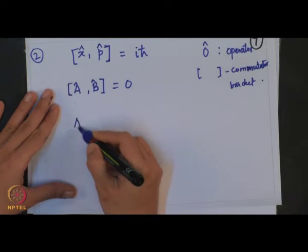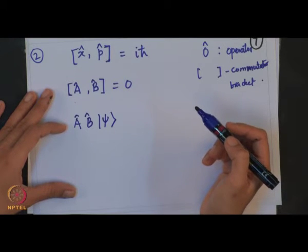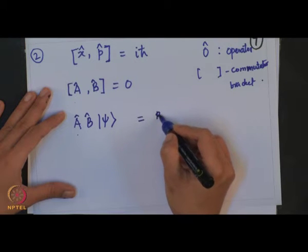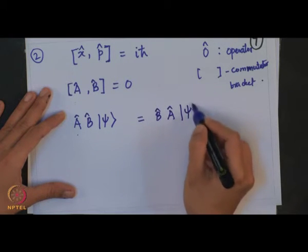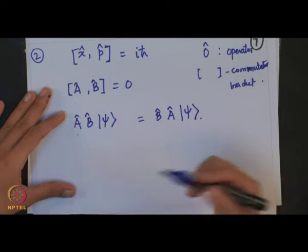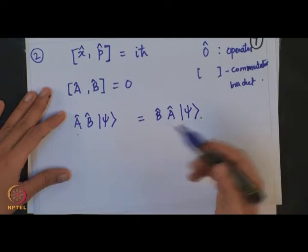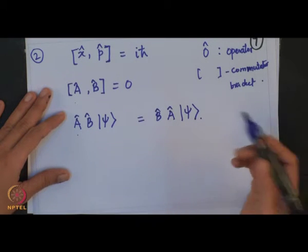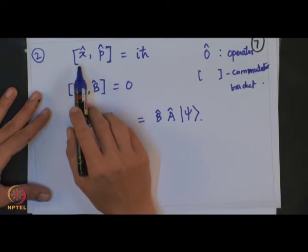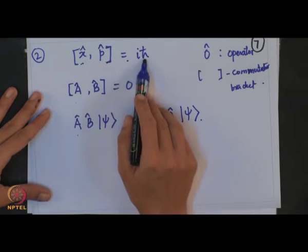When you operate an operator A, B on an eigenvector, the interesting part of these 2 operators is that measurements of A and B are independent, and hence you can form a simultaneous eigenket for these vectors. This will be useful for coming lectures. As we know, the commutator [x̂, p̂] gives iℏ.